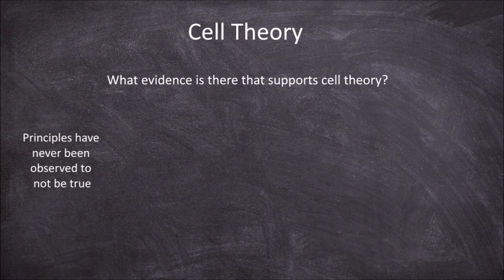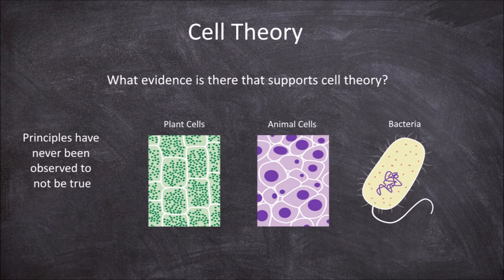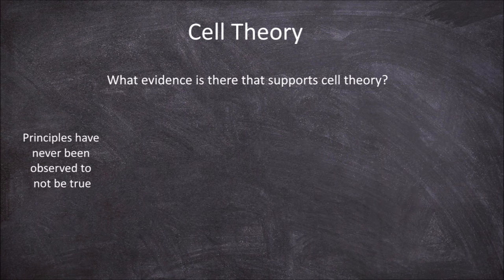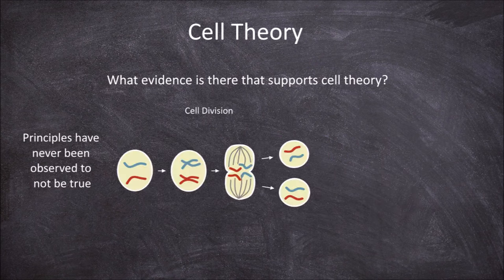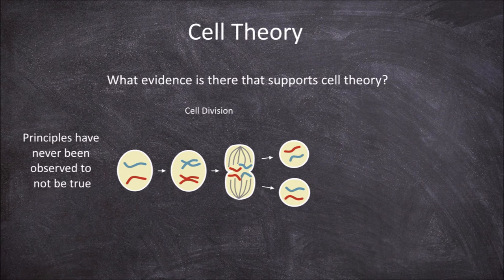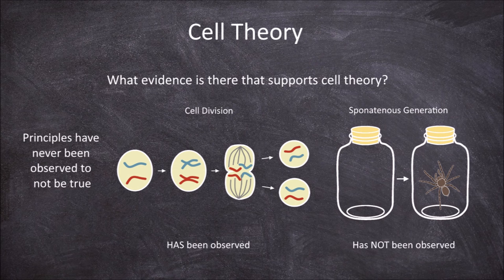Tissues examined from plants, animals, fungi, bacteria, and protists all show the presence of one or more cells. The process of cell division and cells forming from the division of other cells has been observed, but spontaneous generation has not been observed.